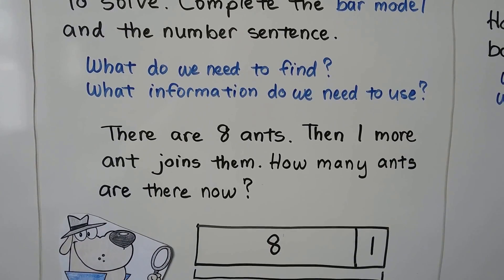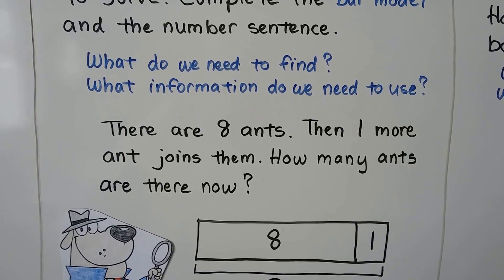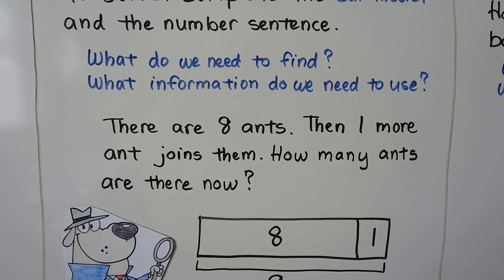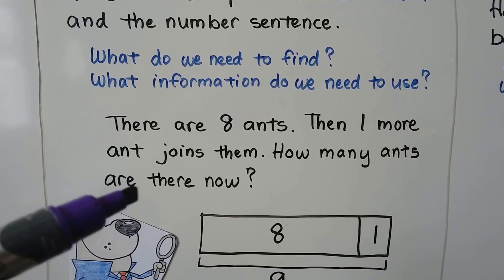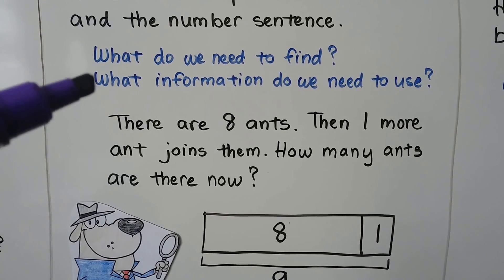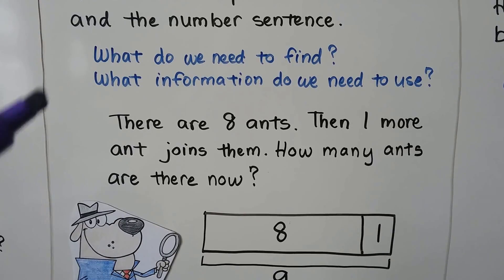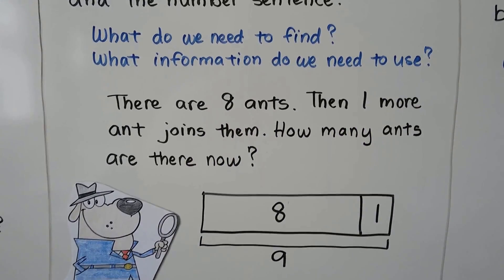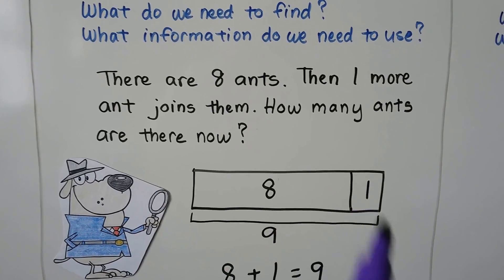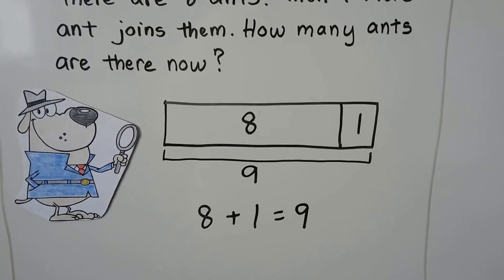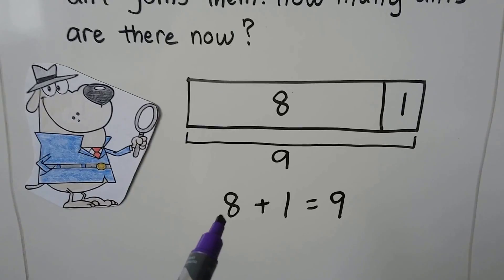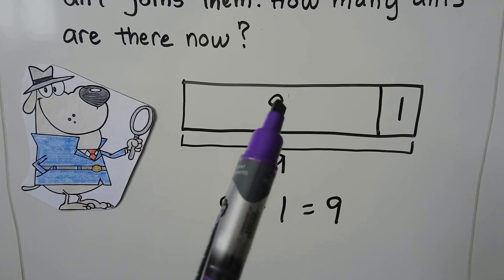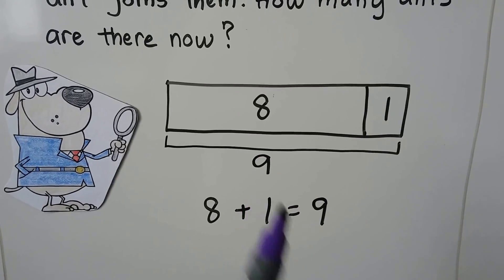There are eight ants. Then one more ant joins them. How many ants are there now? What do we need to find? How many ants there are now. What information do we need to use? We need to know that there are eight ants and one more. We add them together in an equation: eight plus one equals nine.